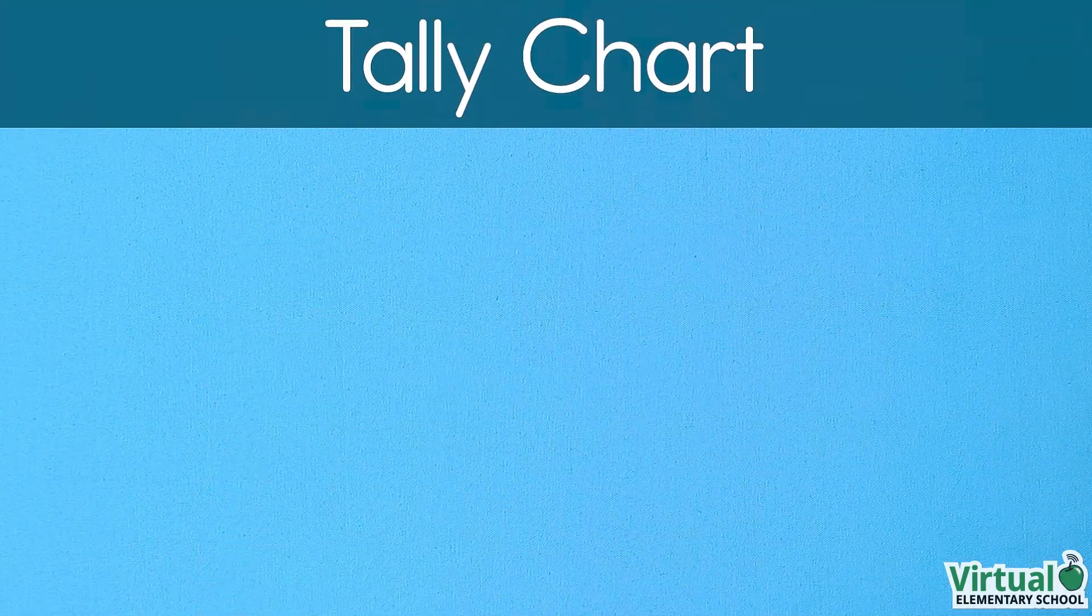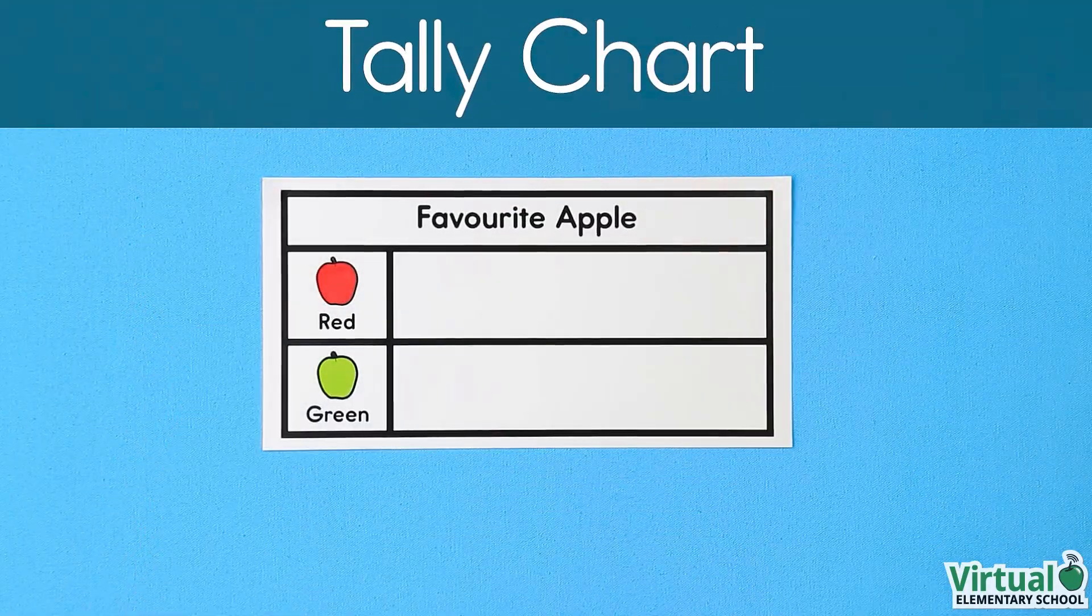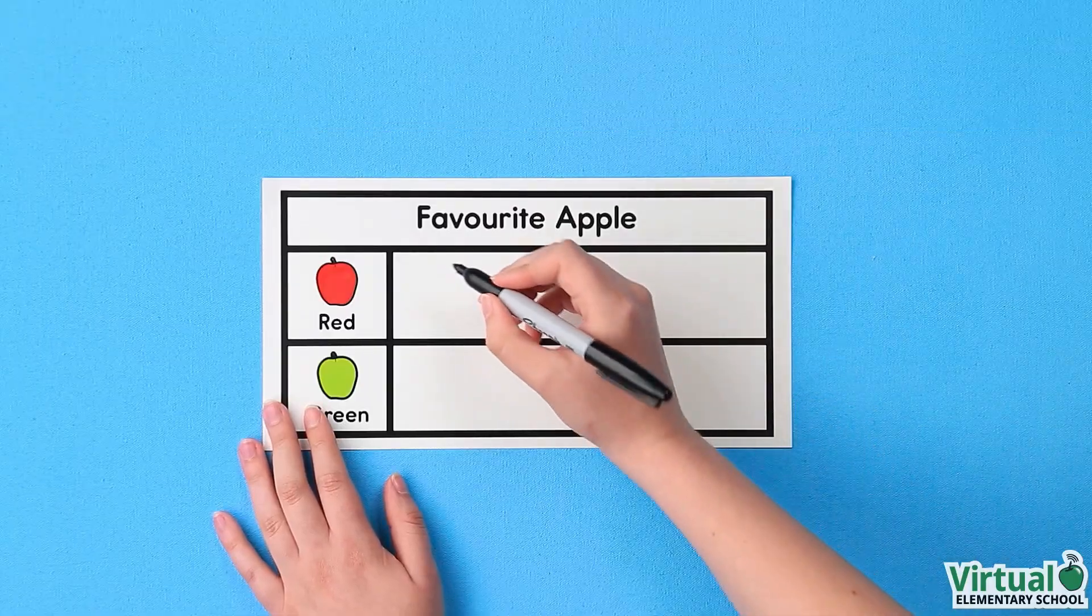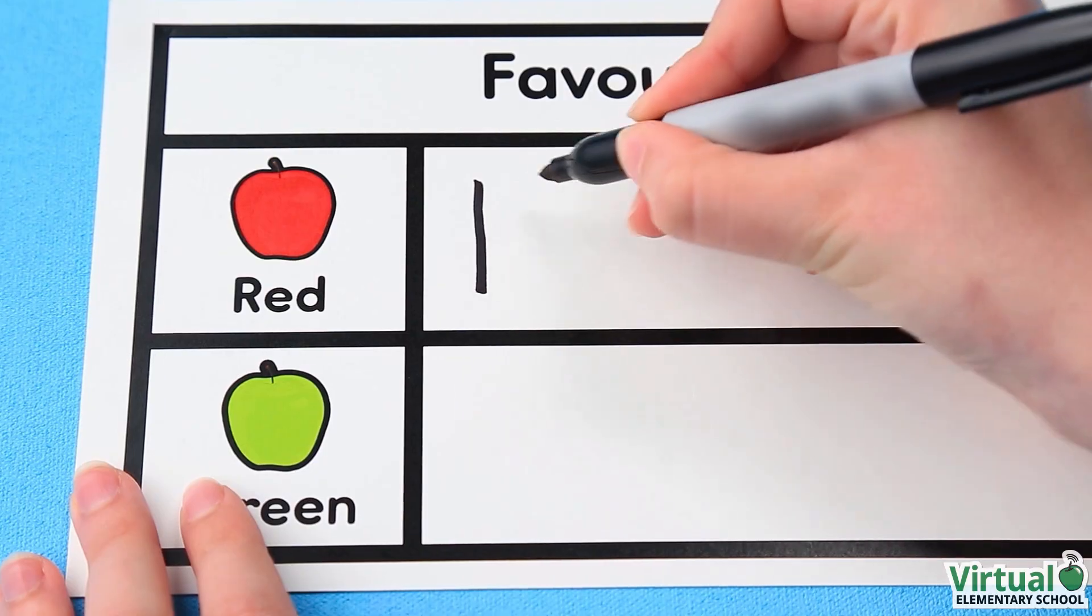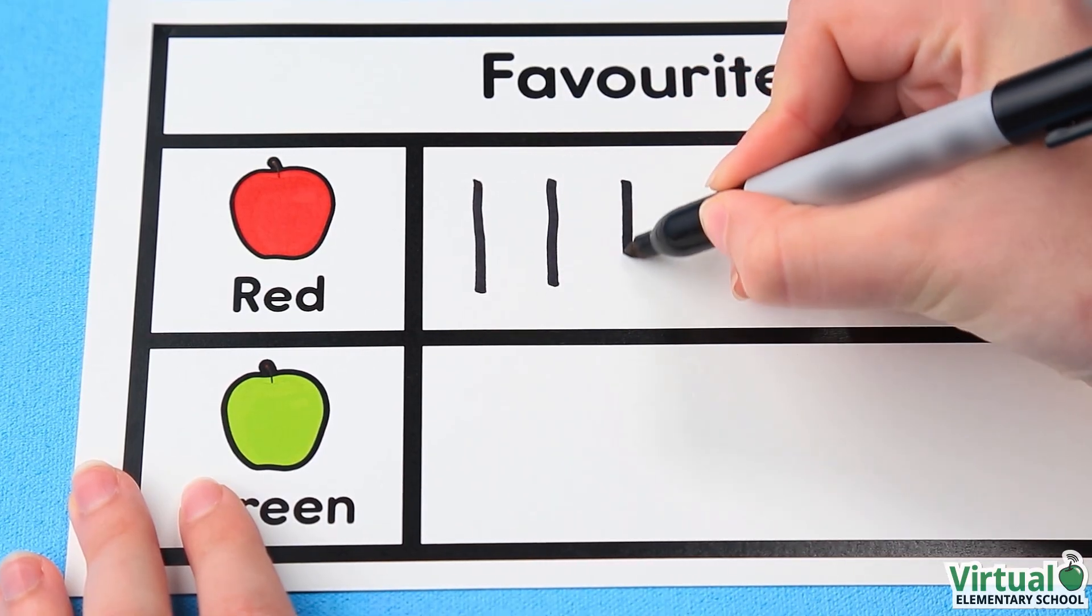Hanna is going to make a tally chart to show the information. Since 6 friends liked red apples, we draw 6 tally marks. We draw the marks in groups of 5.